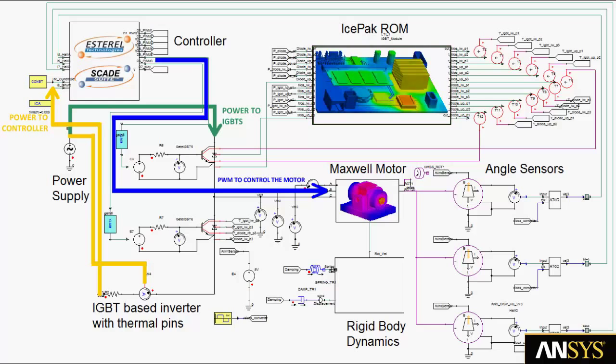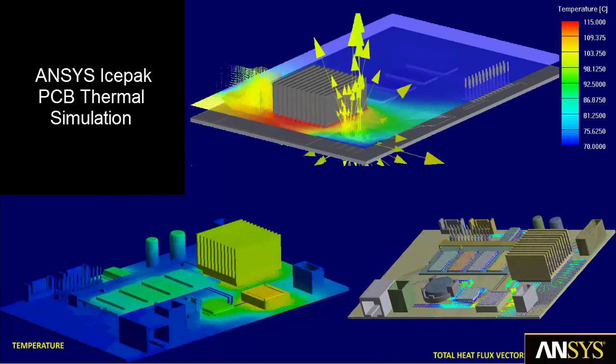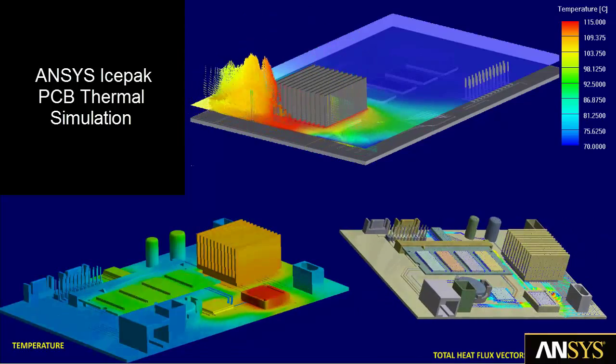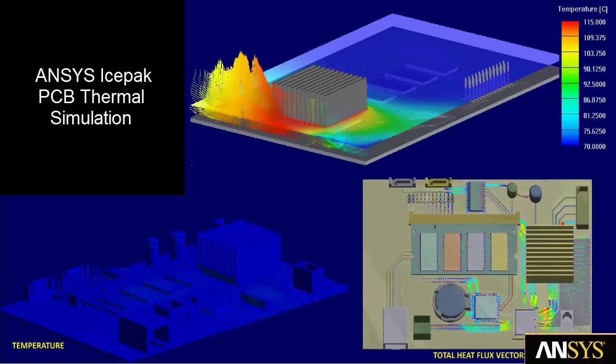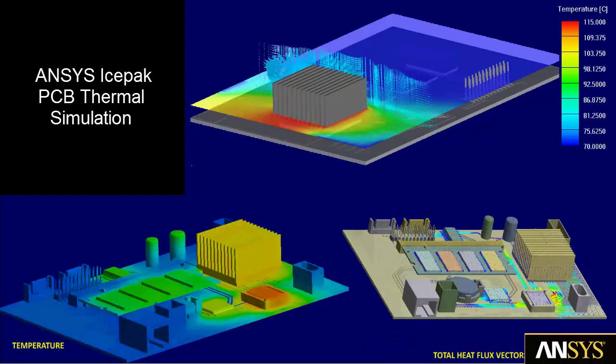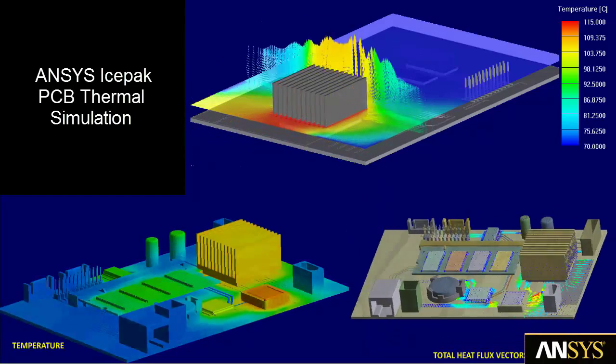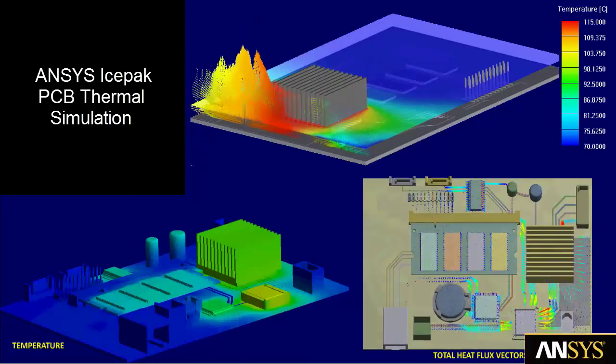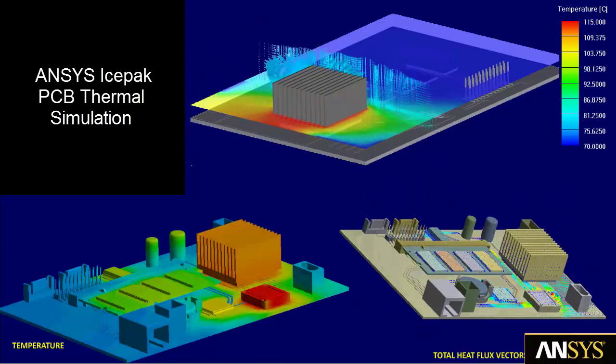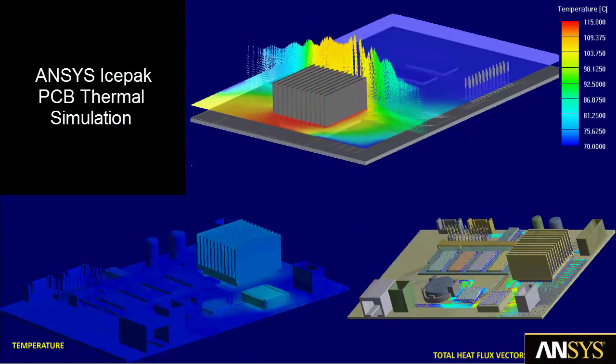Multi-domain multi-physics simulation is accomplished by adding ANSYS IcePack simulation to calculate the temperature of the IGBTs based upon the power delivered. IcePack relies on the ANSYS Fluent Computational Fluid Dynamics Solver to calculate the temperature on the PCB surface and the IGBT devices. Simplora produces a reduced order model based on the IcePack simulation to solve for electrical and thermal values simultaneously.